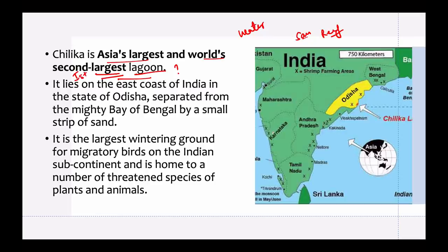The question for you is: which is the world's largest lagoon? You can tell me in the comment box. Looking at the map, Chilika Lake lies on the east coast of India in the state of Odisha. It is separated from the mighty Bay of Bengal by a small strip of sand — as mentioned, lagoons are separated by natural barriers, and in the case of Chilika Lake, that barrier is sand.